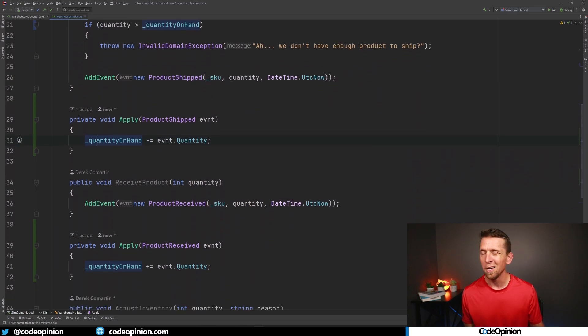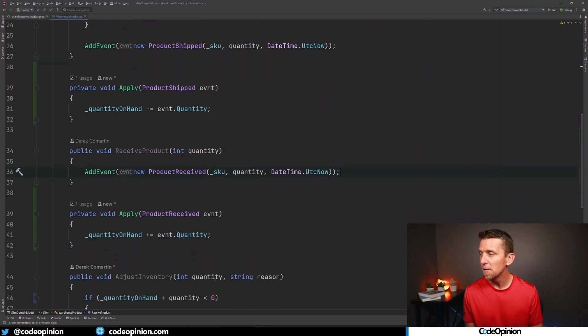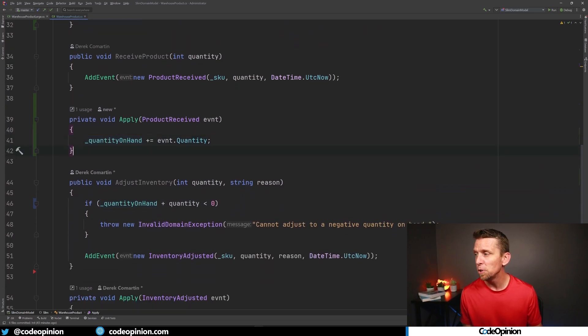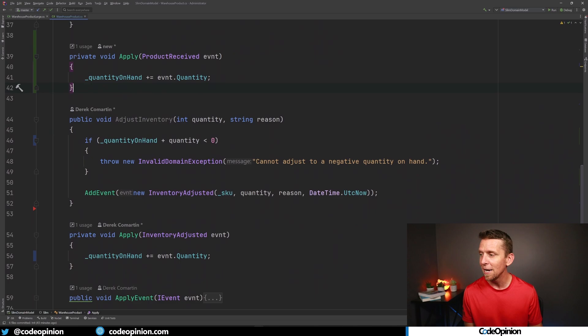Same thing for a received product. We're really not doing any logic around it. We're just saying that's happened. We're creating that event, and then we can apply it by adding that quantity on hand to what we have in memory. Same thing with adjust inventory. We're doing our check and then we're adding that event and we can apply it to keep that internal projection in memory so we can validate whatever behaviors that we want to invoke.